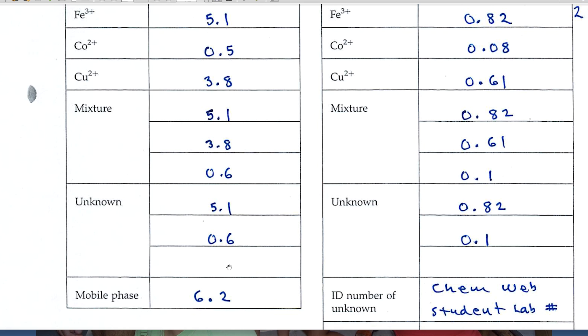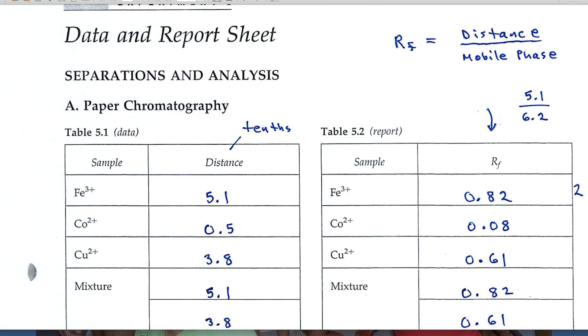The mobile phase is again the solvent that climbs the paper and carries the ions with it. Typically, it moves close to the top of the paper and you'd want to record its distance in tenths as well.